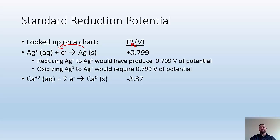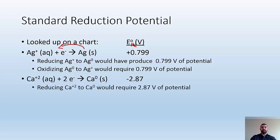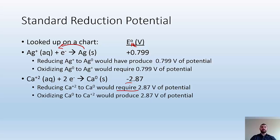Another example: calcium being reduced from plus 2 to 0 has a reduction potential of negative 2.87 volts. So reducing Ca²⁺ to Ca⁰ would require 2.87 volts of potential — that negative sign tells you you need to invest that energy for the reduction to occur. It also means that oxidizing calcium to Ca²⁺ would produce 2.87 volts. That's pretty logical — calcium is a reactive alkaline earth metal, hard to find in pure form, so the reverse reaction is quite favored.